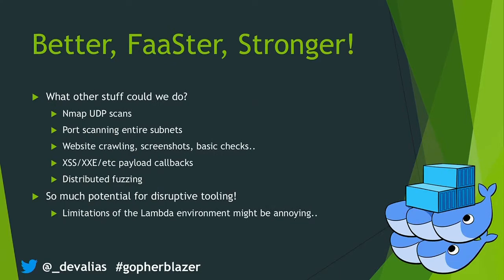After running GoBuster on Lambda, I wondered what else I could apply this concept to — things that take a long time and aren't really that fun. Maybe nmap UDP scans, scanning subnets, running basic checks, or taking screenshots of all the websites you find. And if you can fit it in that 300-second window that Lambda gives you, maybe you could even run fuzzing payloads across it. Though there's quite a lot of cool stuff you could do, the Lambda environment's invocation limits might get in your way — there's a 300-second limit and it's hard to debug while running.